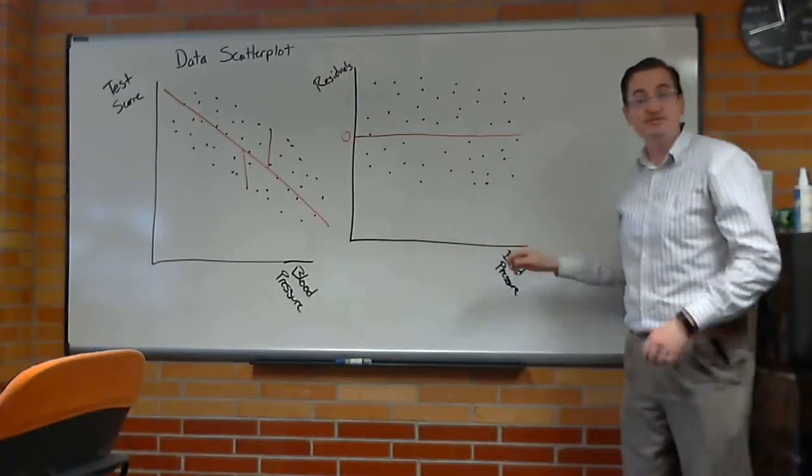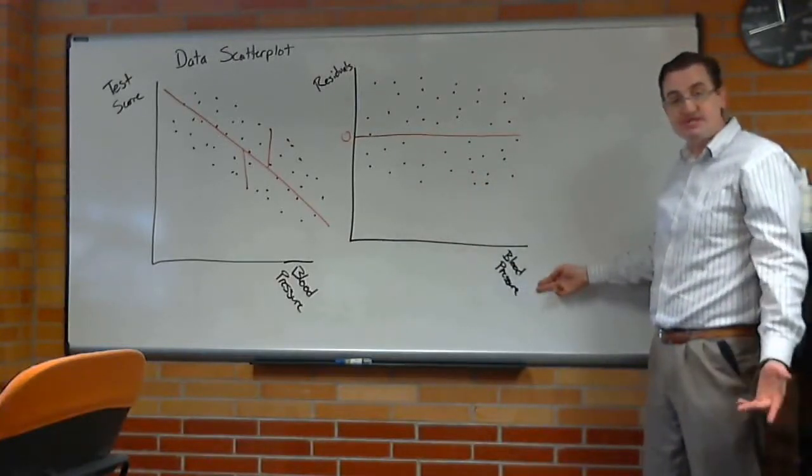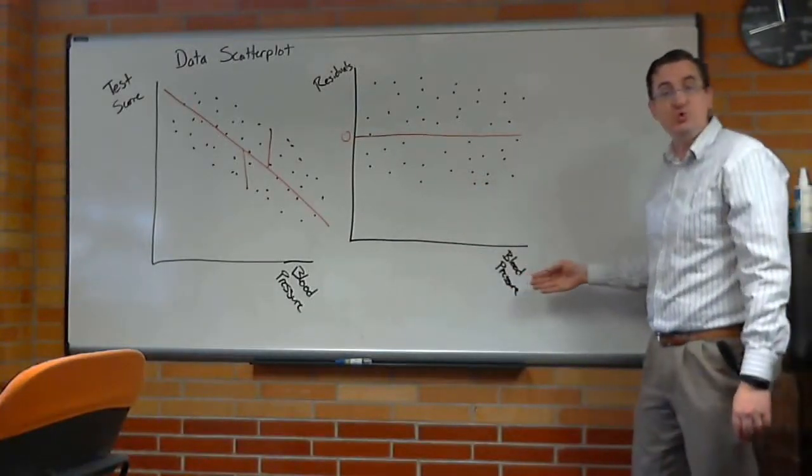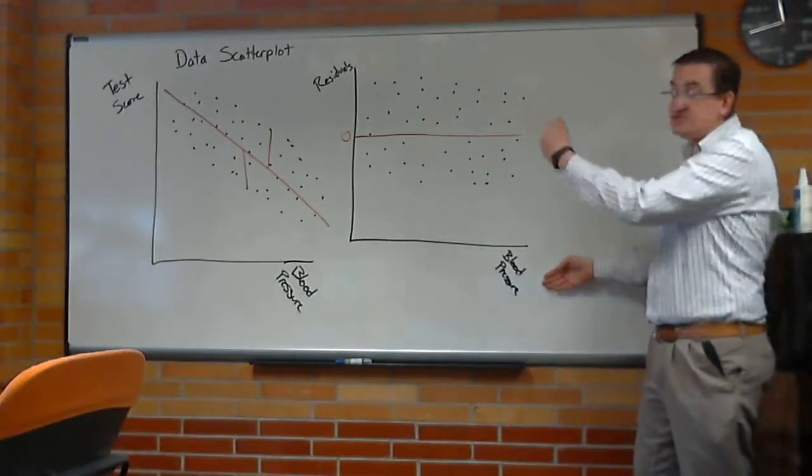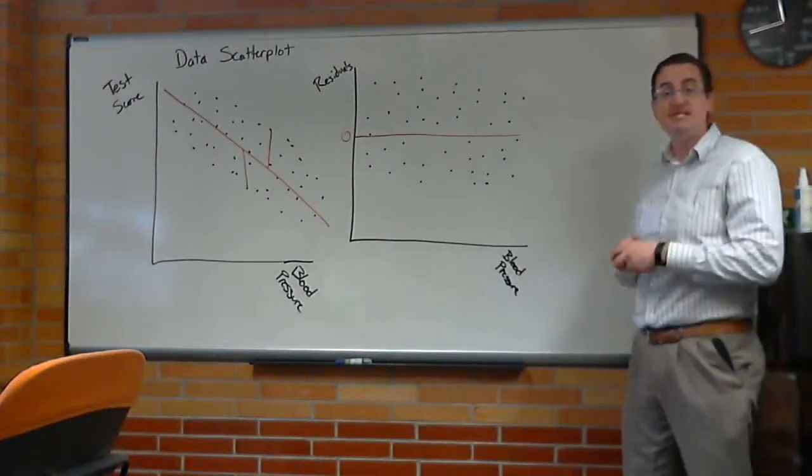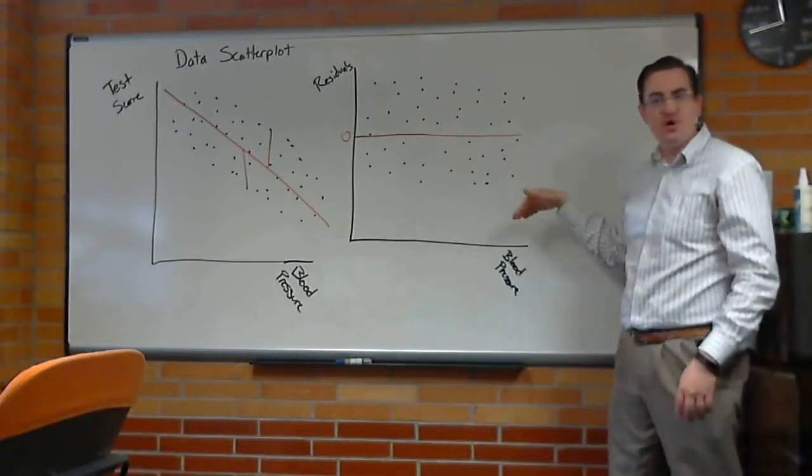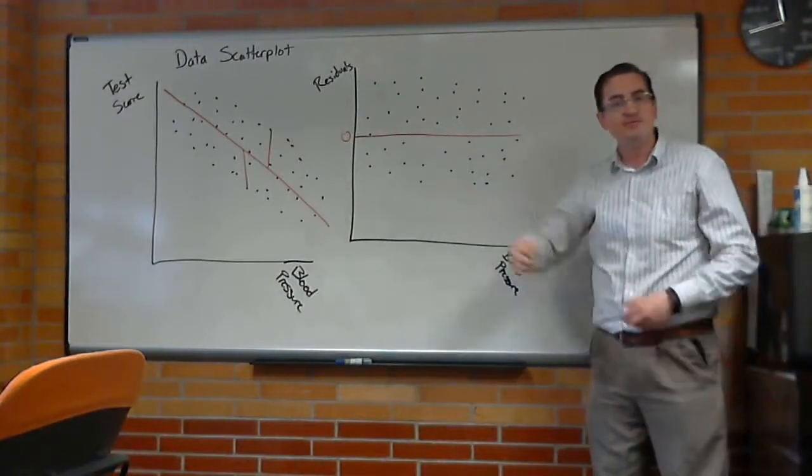So these are two different plots that are very similar. I put blood pressure, which is the x value, on both of these. But you could also put test score, which is the y value, or other various things as the x. And you're still looking for, are they randomly scattered around the regression line?